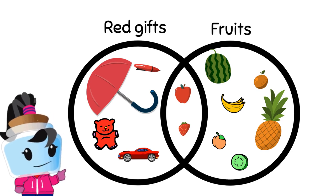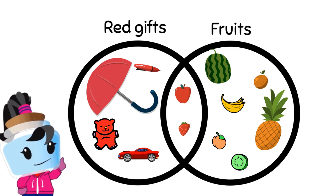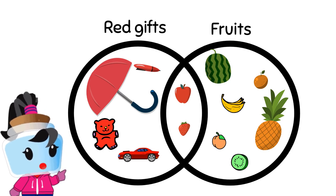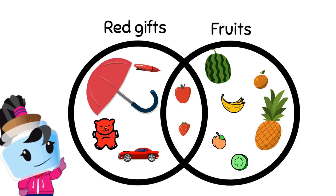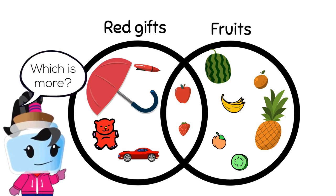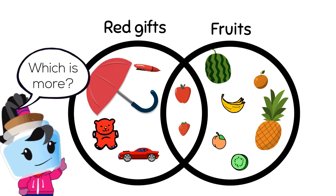Let's look back at Ivan's Venn diagram. Between the red gifts and the fruits, how do we find out what type of items his mom bought more of?